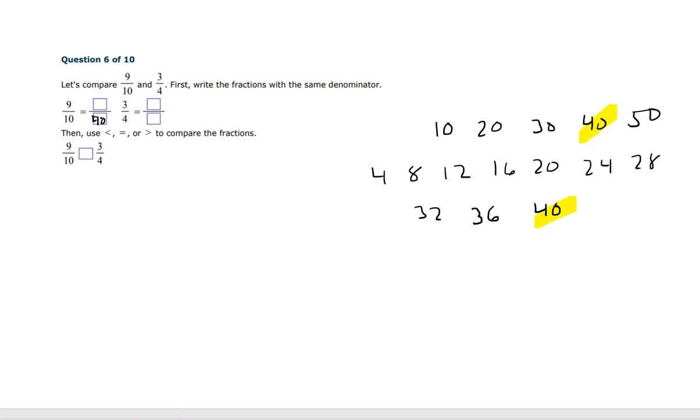So our common denominator would be 40. And to get from 10 to 40, we had to multiply by 4. So that means 9 times 4 is 36. To get from 4 to 40, we had to multiply by 10. So 3 times 10 is 30. Now we can compare 36 fortieths to 30 fortieths. And it's very easy to see that this one's bigger. That means that 9 tenths is bigger than 3 fourths.